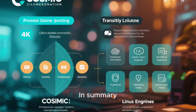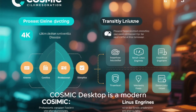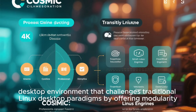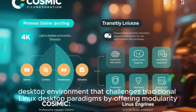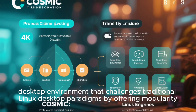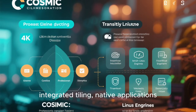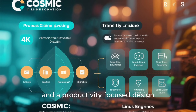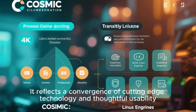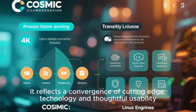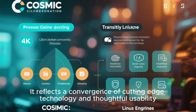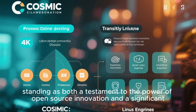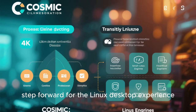In summary, System76's Cosmic Desktop is a modern, Rust-based, Wayland-native desktop environment that challenges traditional Linux desktop paradigms by offering modularity, integrated tiling, native applications, and a productivity-focused design. It reflects a convergence of cutting-edge technology and thoughtful usability, standing as both a testament to the power of open-source innovation and a significant step forward for the Linux desktop experience. Given its current trajectory, with ongoing development, refinements, and broader adoption by other distributions, Cosmic has the potential to become one of the major contenders in the Linux desktop space.